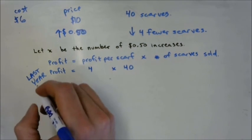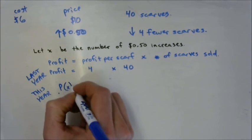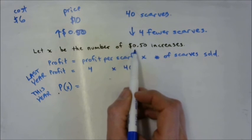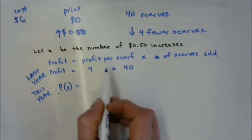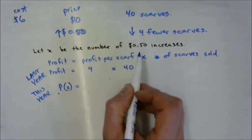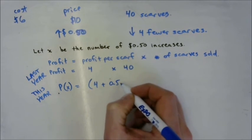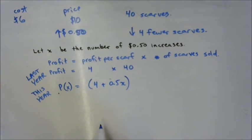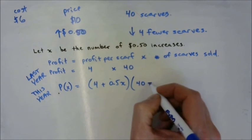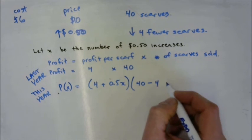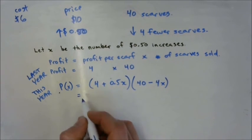Last year: four dollars profit per scarf, forty scarves sold. This year, let x be the number of fifty-cent increases. Profit per scarf this year: 4 + 0.5x. Number of scarves sold this year: 40 − 4x. Profit equals profit per scarf times number of scarves sold.